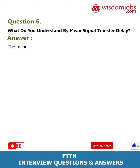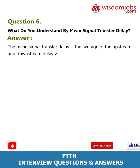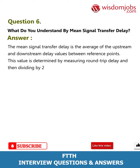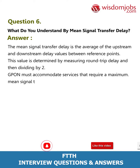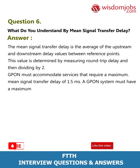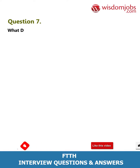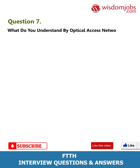Question 6: What do you understand by mean signal transfer delay? Answer: The mean signal transfer delay is the average of the upstream and downstream delay values between reference points. This value is determined by measuring round trip delay and then dividing by 2. A PON system must accommodate services that require a maximum mean signal transfer delay of 1.5 ms. A PON system must have a maximum mean signal transfer delay of less than 1.5 ms between two reference points.